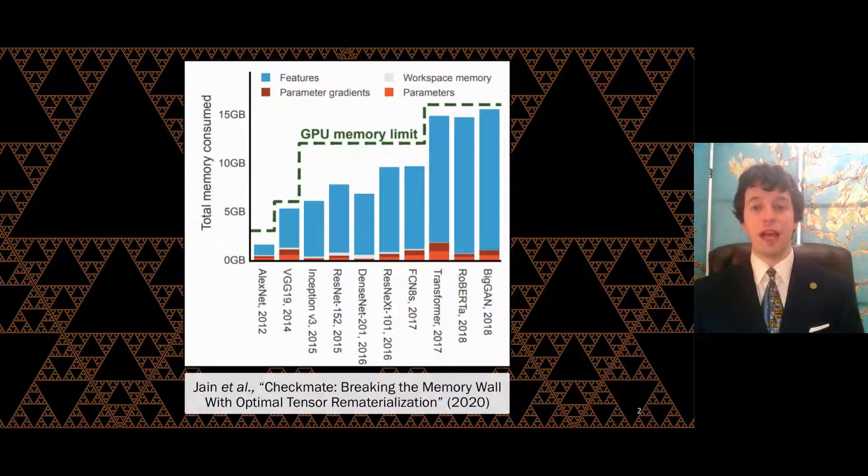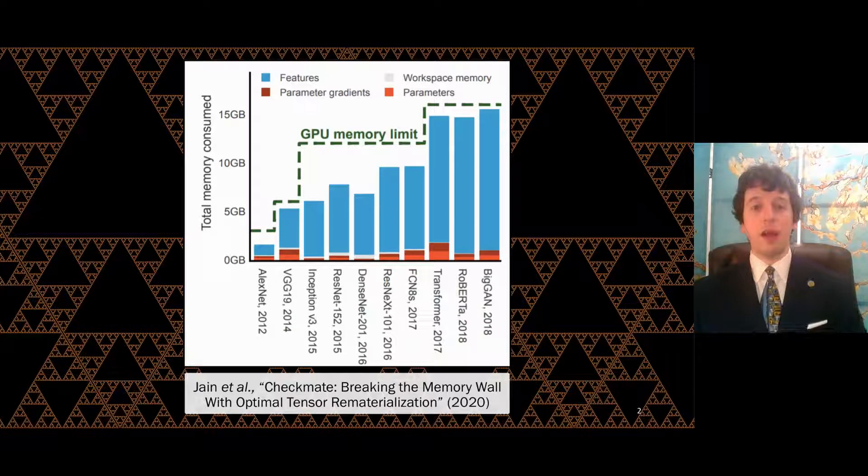As this graph from the MLSYS 2020 paper Checkmate shows, the latest deep learning models make full use of the physical memory available to them. They are bounded by it. Parrish Jain and his co-authors describe this limitation as a memory wall, since hardware constraints limit the deep learning applications that can be explored, thereby also limiting the pace of research.